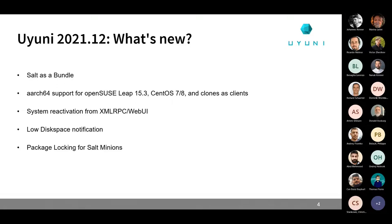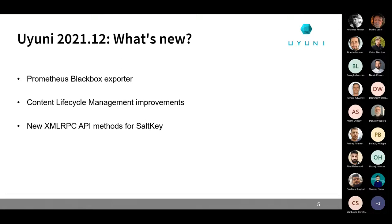We are adding package locking for Salt minions — this was a long-pending request and is no longer restricted to traditional only. We also added the Prometheus Blackbox exporter, meaning you will be able to integrate checks for HTTP, HTTPS, ping, etc. into Prometheus, which was not possible until now. There are also content lifecycle management improvements: you can now see the date and time of the last build for each project, and we have new XML-RPC API methods for Salt key management to help automate tasks.